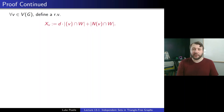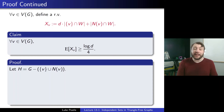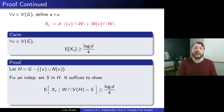The key claim is that for every vertex v in V(G), E[Xv] is at least log d over 4. Here's the proof. Let H = G minus (v union N(v)), deleting v and its neighbors. We fix an independent set S in H, and it suffices to show that E[Xv | W ∩ V(H) = S] is at least log d over 4. So no matter what the enemy fixes as an independent set outside the neighborhood of v, the conditional expectation is still large.